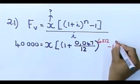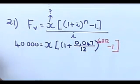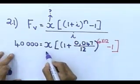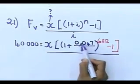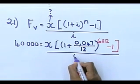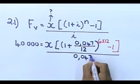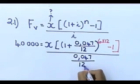Fantastic. Minus 1. Close your bracket there. And we are dividing by. I said that i is the same as this one. So, my interest rate is 0.047 divided by 12.